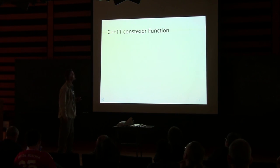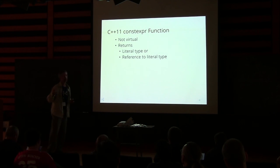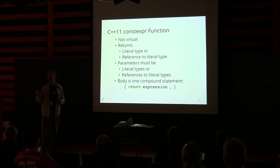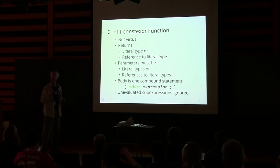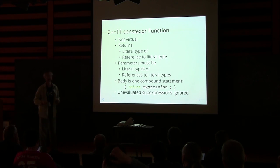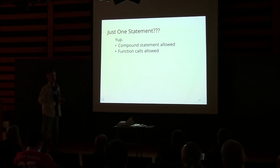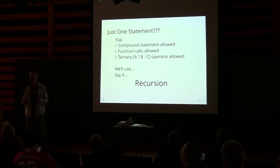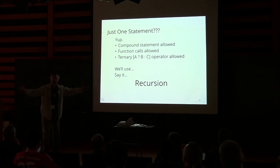Constexpr in C++11: if you want to write a C++11 constexpr function, it can't be virtual. It returns a literal type or a reference to a literal type. Parameters must be literal types or references to literal types. The body is one compound statement — just one statement. Compound statements are allowed, function calls are allowed, the ternary operator is allowed, and recursion is allowed.